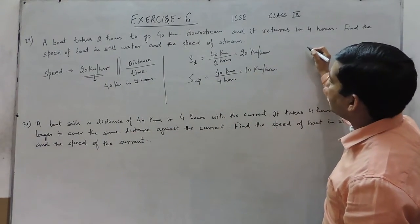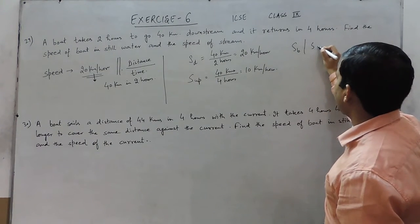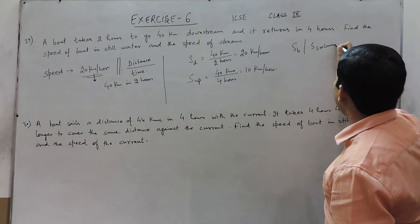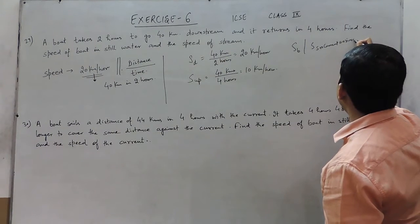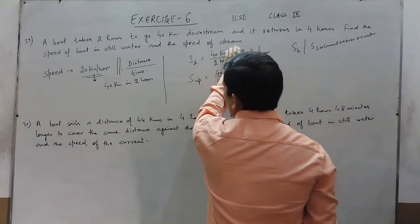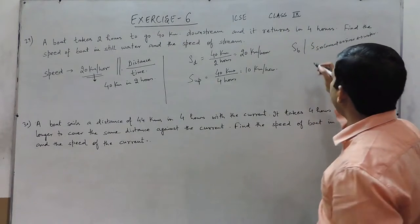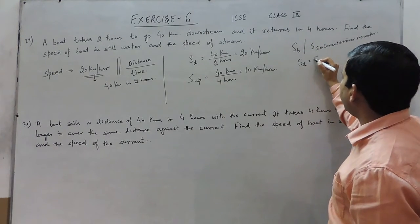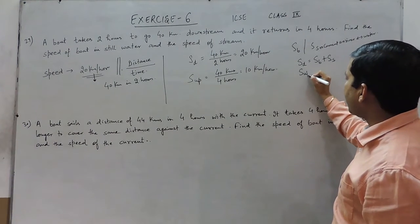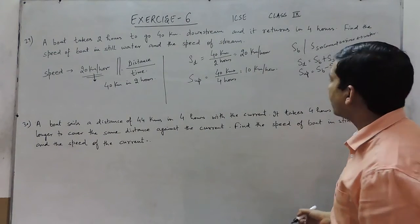Now we have to understand two more terms: the speed of boat and the speed of stream. The speed of stream can also be called speed of current, speed of river, or speed of water. When I talk about speed downstream, it is the speed of boat plus speed of stream, while speed upstream is equal to speed of boat minus speed of stream.